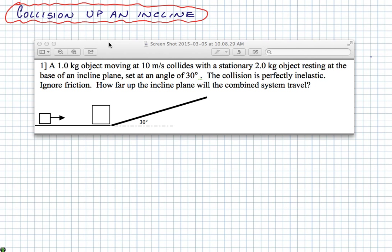We can make some assumptions here. We can ignore the transition between the horizontal motion and the incline motion. Just pretend that it's a smooth motion. And it says that the collision is perfectly inelastic. That means that the two objects stick together. And it also says that we should ignore friction. The question is, how far up the incline will the system travel?